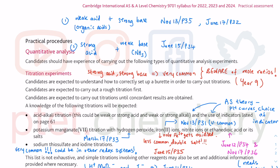Hello again everyone, welcome back to PTAC chemistry channel. My name is Dr. On. In this tutorial video, I'll continue this list of practical experiments stated in Cambridge International 9701. This is A-level chemistry. PEP3 component practical is the AS-level component, this is the syllabus from 2022 onwards.